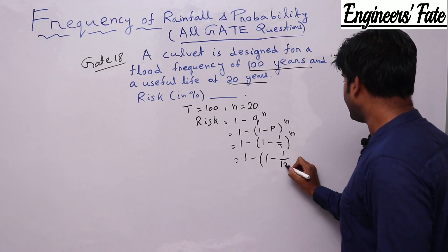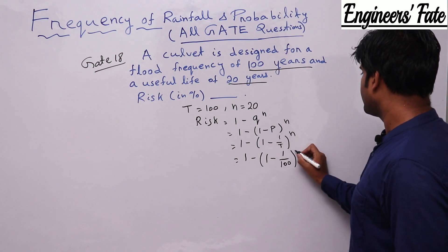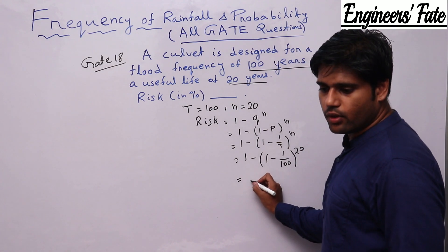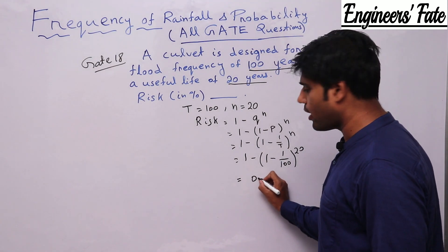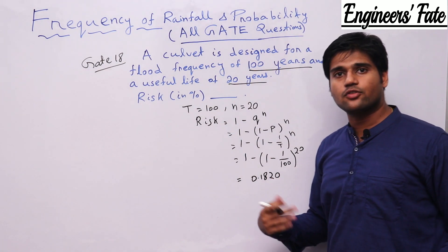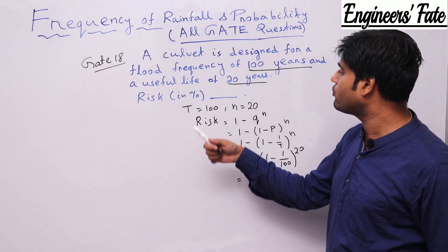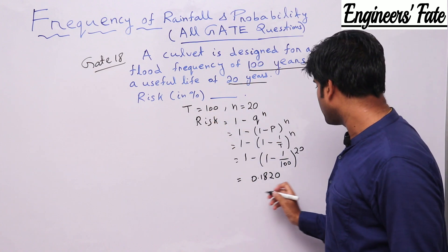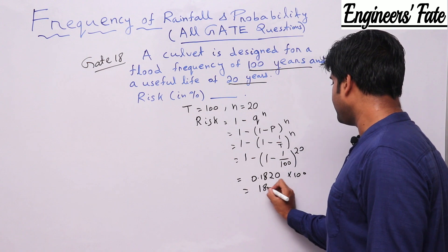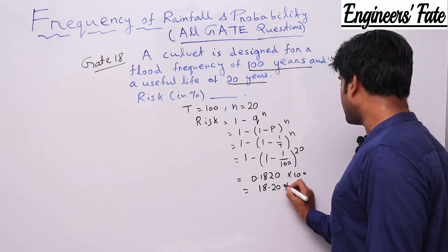So if you find 1 minus 1 minus 1 by T equal to 100 to the power 20, you can find this will be 0.1820. But in this question he has asked to find in percent. So if you multiply by 100 that will be 18.20 percentage.